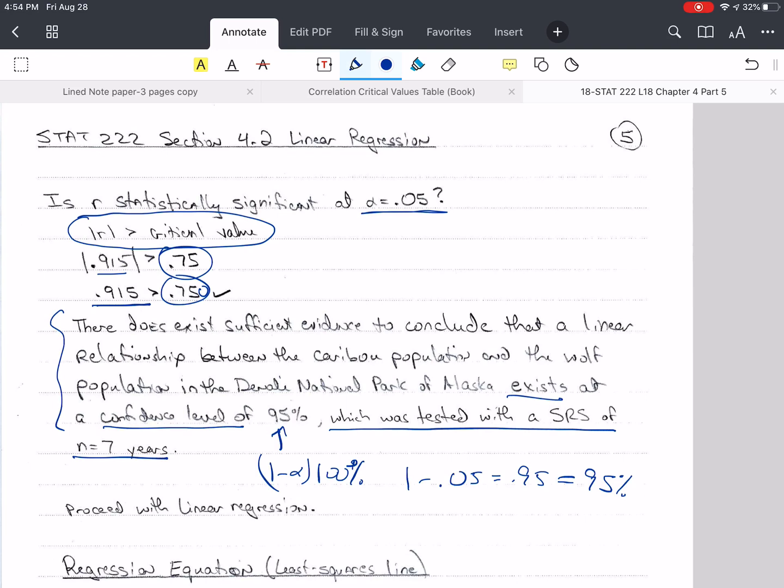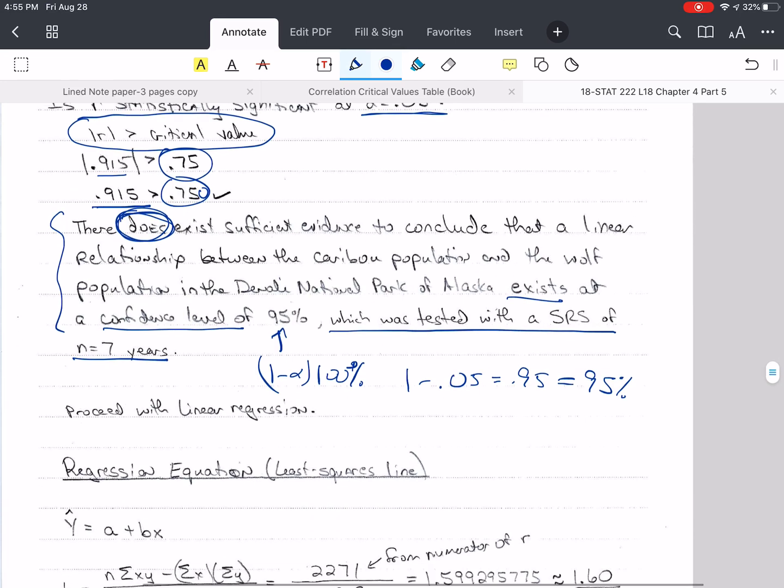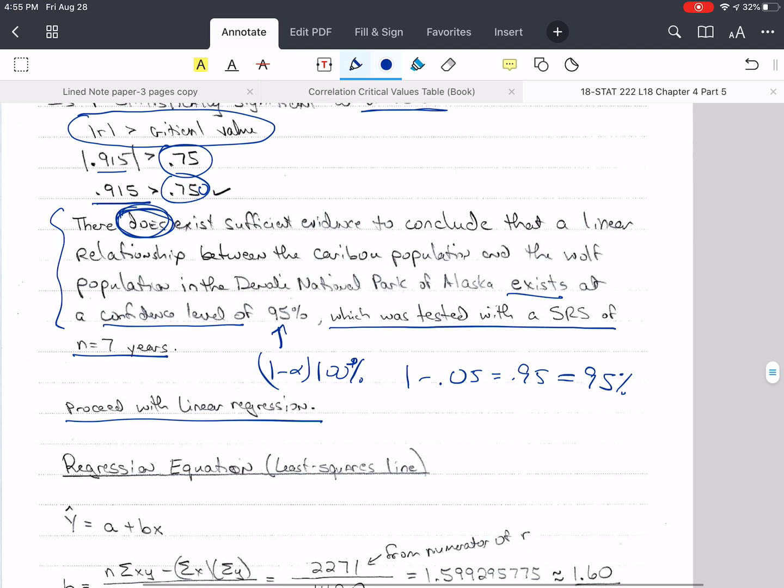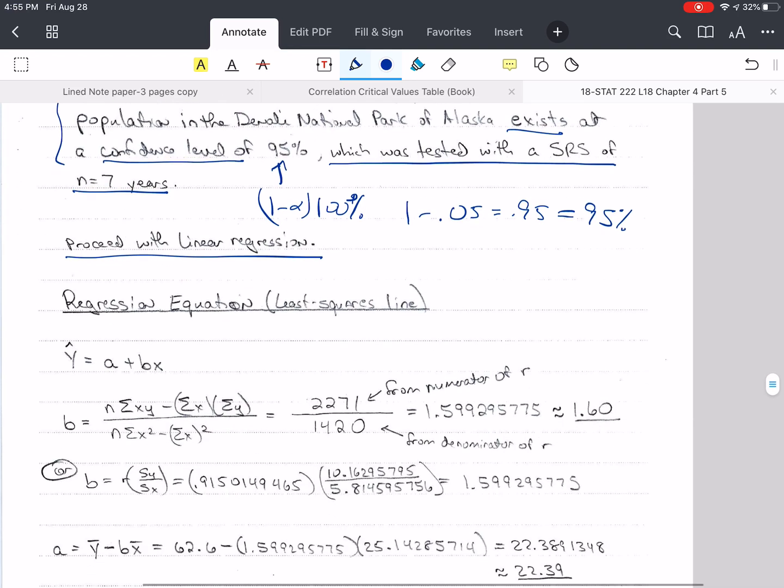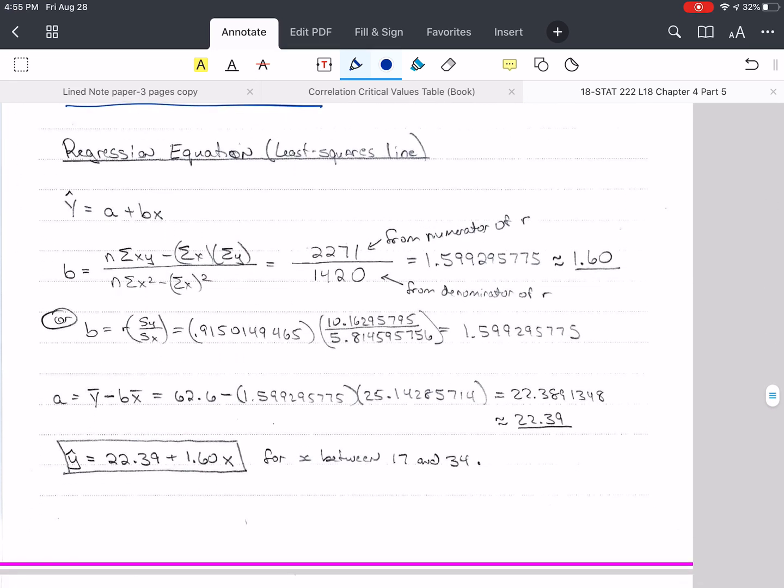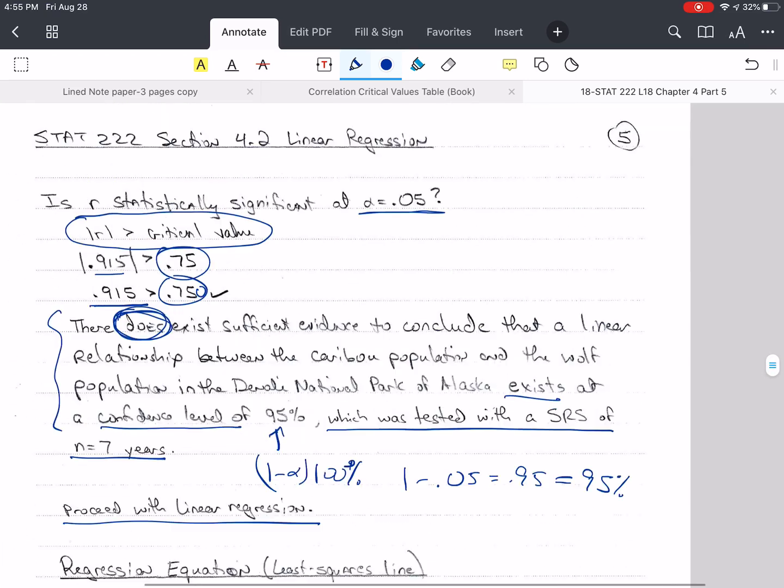Since there does exist sufficient evidence, remember if r was too small we'd say there does not exist sufficient evidence, and everything else would be the same. The only thing that changes is whether this is does or does not. So since it is significant, we will proceed with linear regression. That's why we chose this example. Now we want our regression equation, our least squares line. I've done this both ways and already got this information from before.